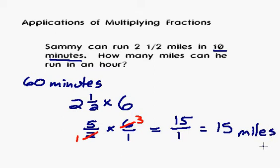Actually, since we've figured out how many miles he can run in one hour, we've figured out basically his rate, how fast he can run. He can run 15 miles per hour or in one hour. That's pretty good. That's pretty fast. Let's look at another example.